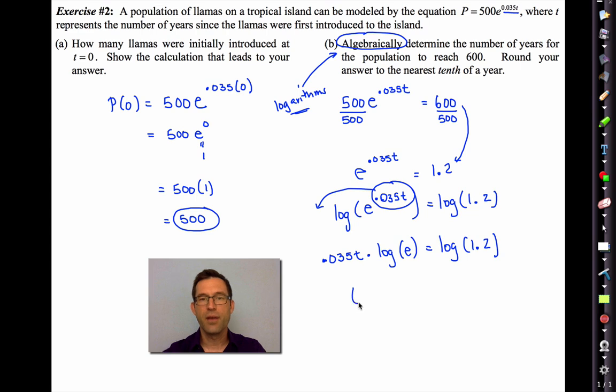Now I think I'll use that common log base 10 and I'll get log of e to the 0.035t equals the log of 1.2. And that's going to allow me now to bring this out. 0.035t times the log of e equals the log of 1.2. And finally t is being multiplied by 0.035 and multiplied by the log of e. So we can divide by both of those.